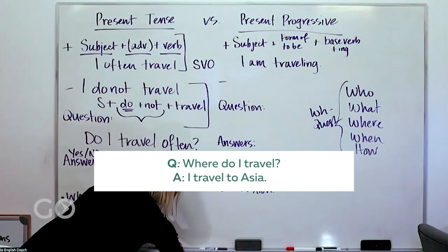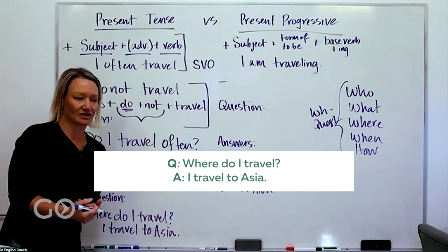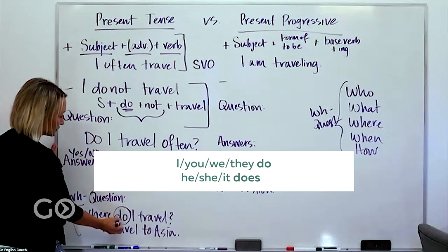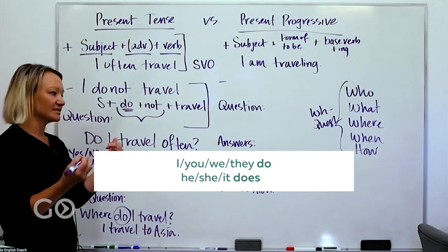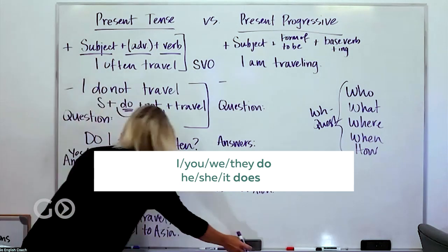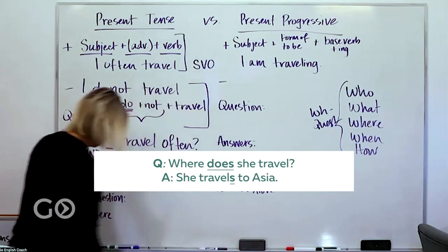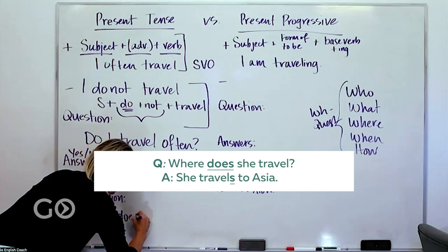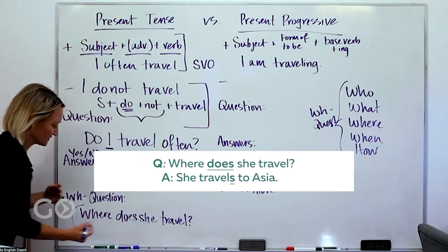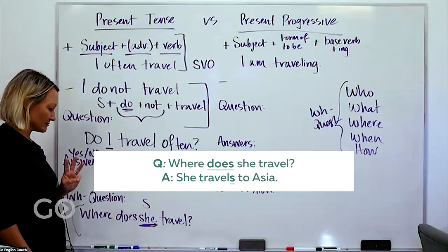So that's in general and then the answer will be I travel to Asia. It's a more complete answer. And this one is do, and if you're using he or she, then we're using does. Where does she travel? Because we have this subject she, then yes we're going to change it to does, the third person.